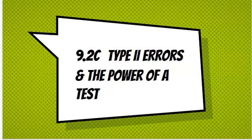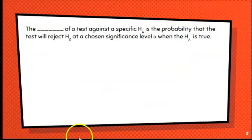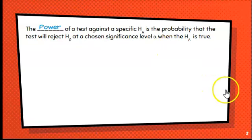In 9.2c, we're going to look at type 2 errors and the power of a test. The power of a test against a specific alternative hypothesis is the probability that the test will reject the null at a chosen significance level alpha when the alternative is true.